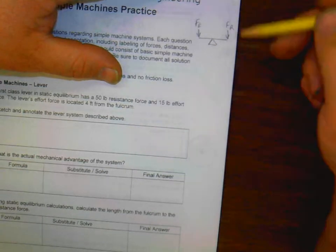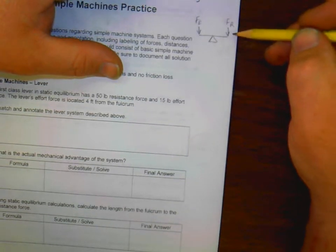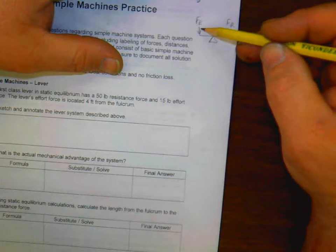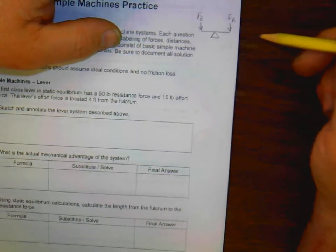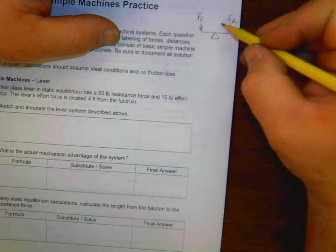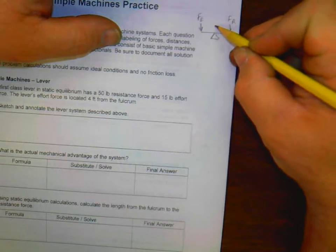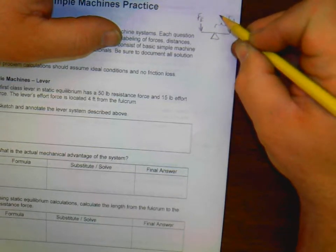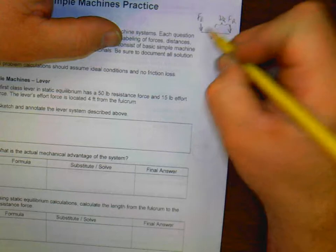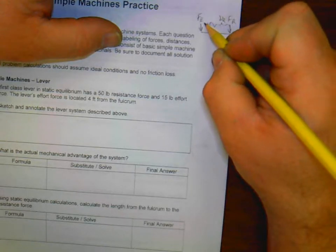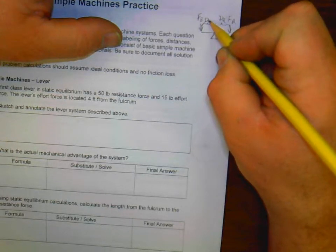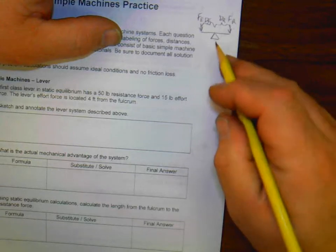Notice, first-class lever, directions of forces are the same direction. We also have distance of the resistance and distance of the effort. All right, five components here on these first-class levers. A fulcrum somewhere along the lever.